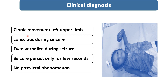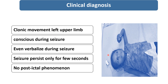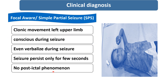Clinical diagnosis on the basis of clonic movement of the left upper limb: the child is having normal conscious level, even verbalizing during the seizure, and the seizure persists only for a few seconds with no postictal phenomena. Clinical diagnosis will be focal aware seizure, or simple partial seizure. Previously we used the terminology SPS, but now we use the terminology focal aware seizure.